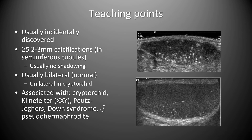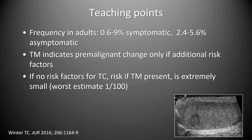Testicular microlithiasis is usually incidentally discovered, comprised of 2–3 mm calcifications in the seminiferous tubules with 5 or more within one view of the testis. It is usually bilateral but can be unilateral in cryptorchid testes. Associations include cryptorchidism, Klinefelter syndrome, Peutz-Jeghers disease, Down syndrome, and male pseudohermaphroditism. It occurs in up to 9% of symptomatic adults and 2.5–5.5% of asymptomatic adults.